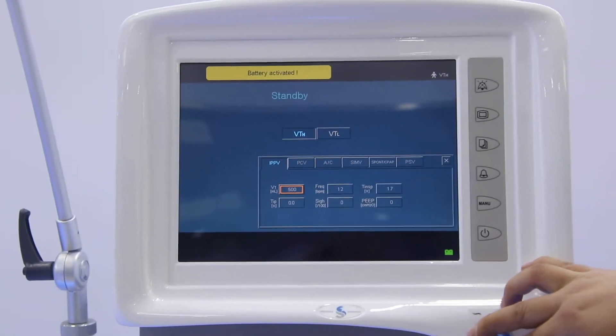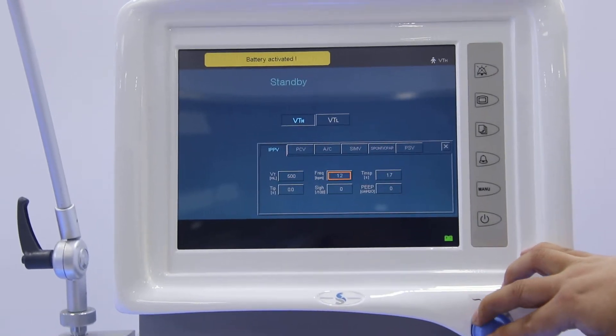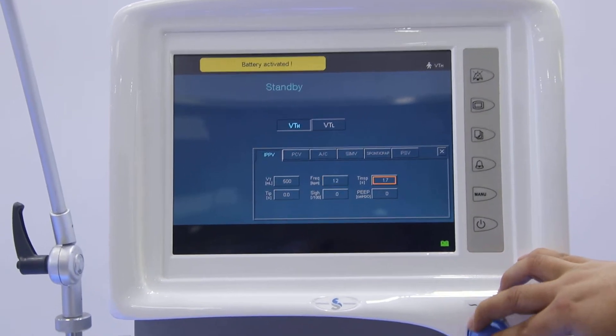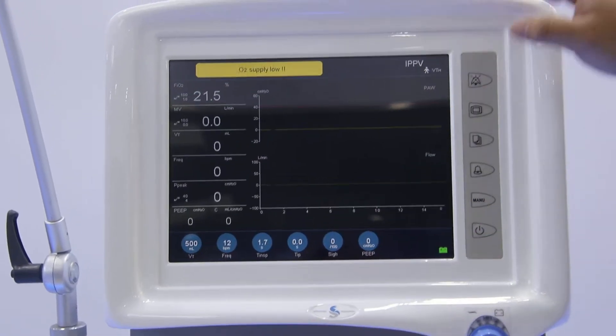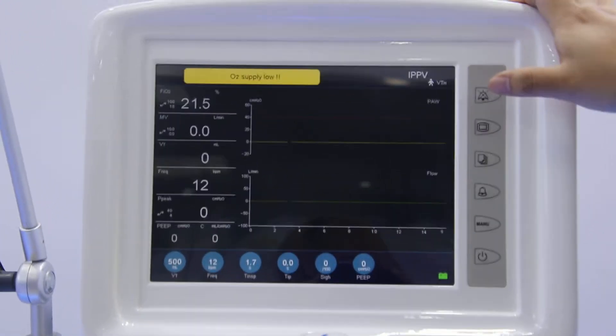And then under each of the ventilation modes, we can choose different details like the tidal volume, frequency, and I:E ratio. Then once we confirm, we will get into the main interface. On the main interface, we have totally four parts.